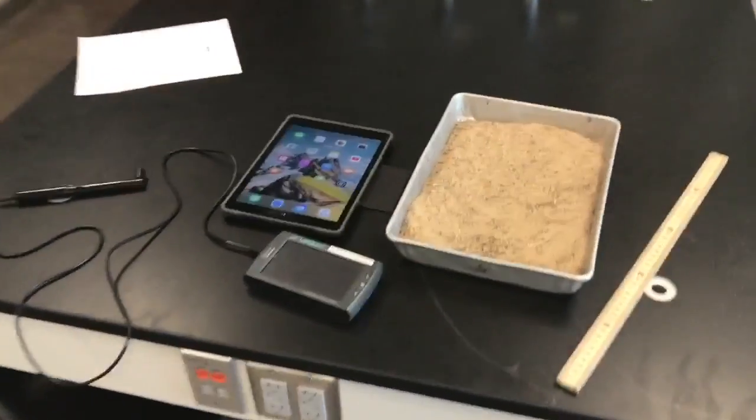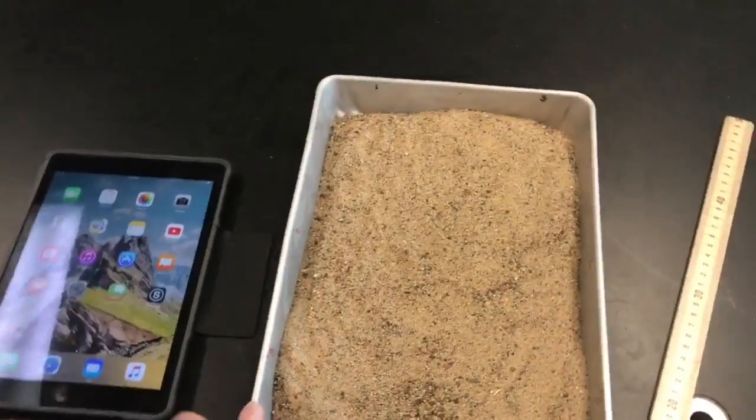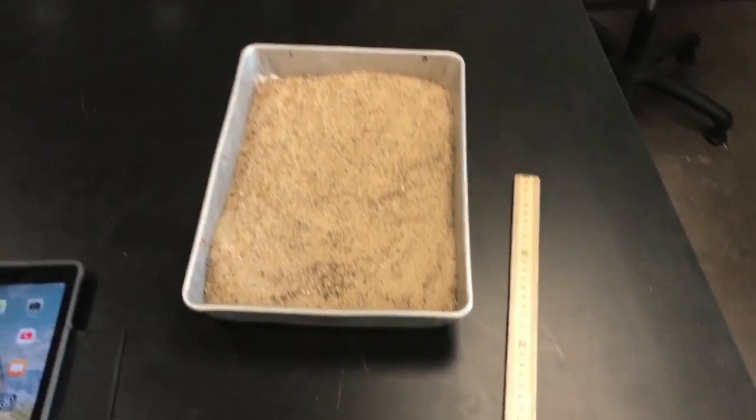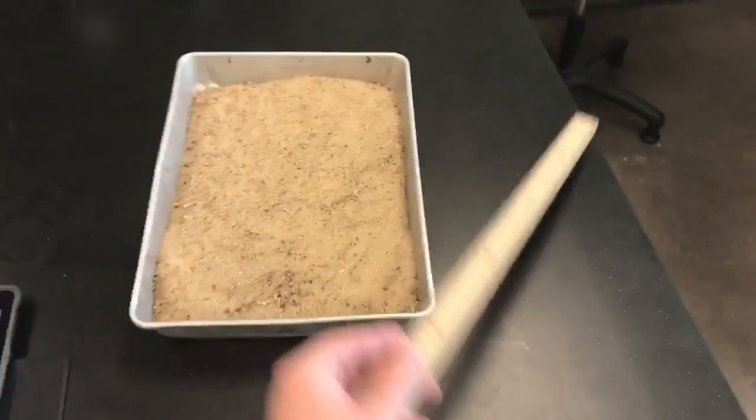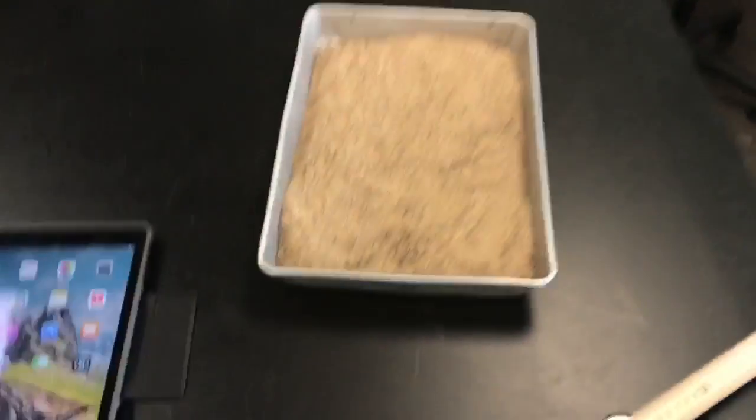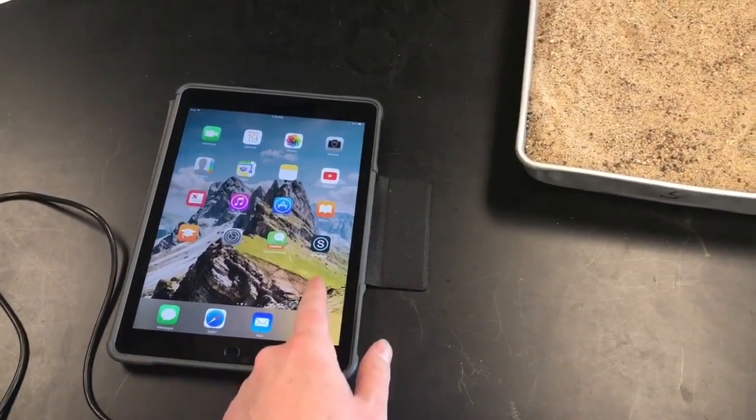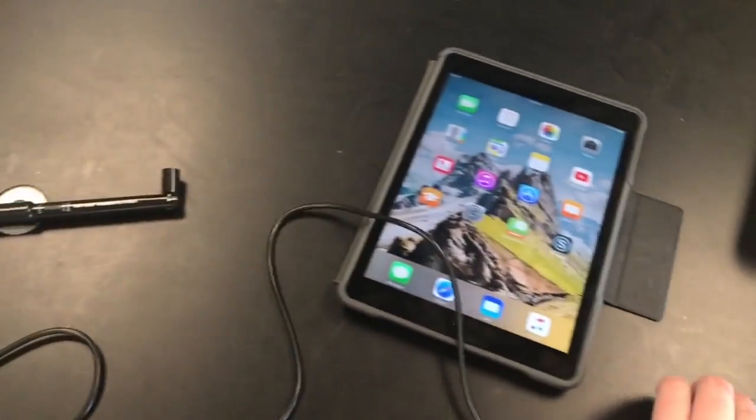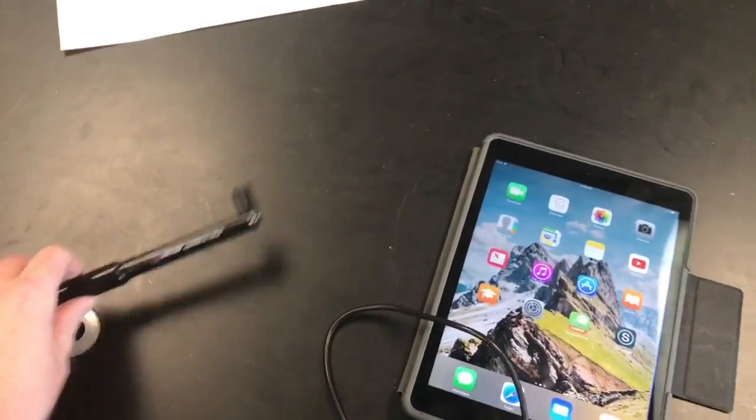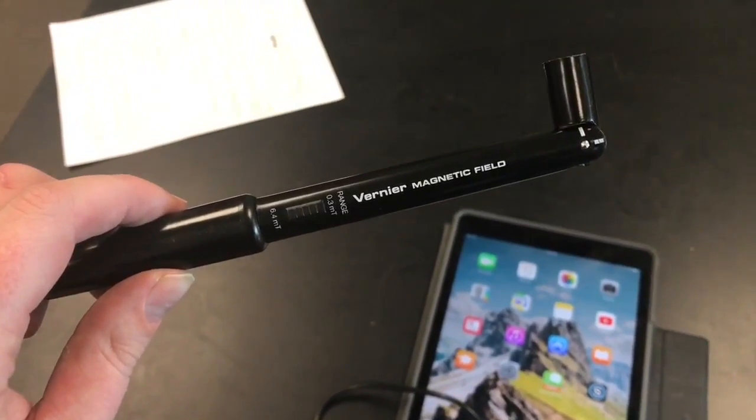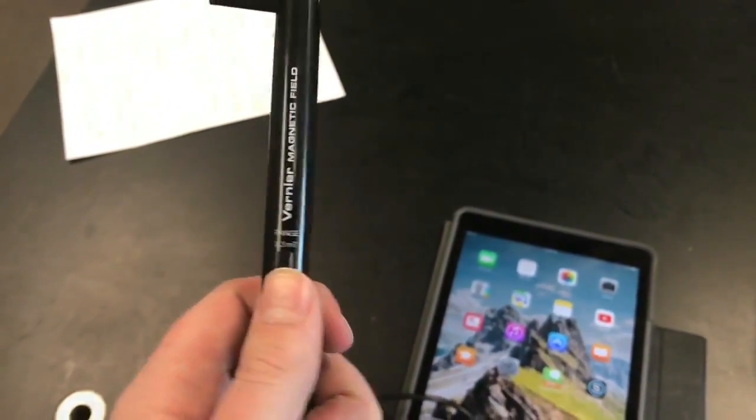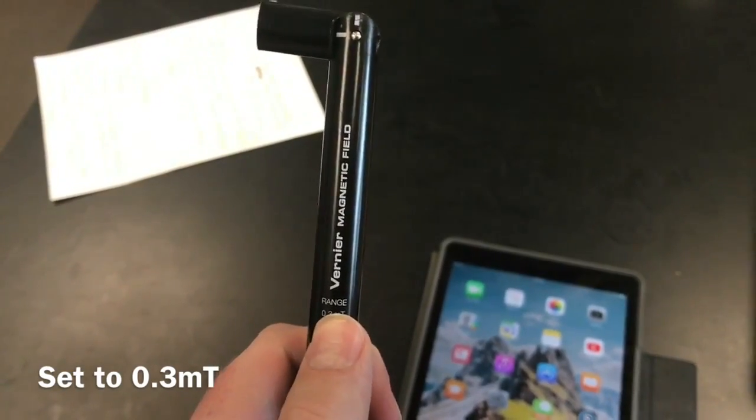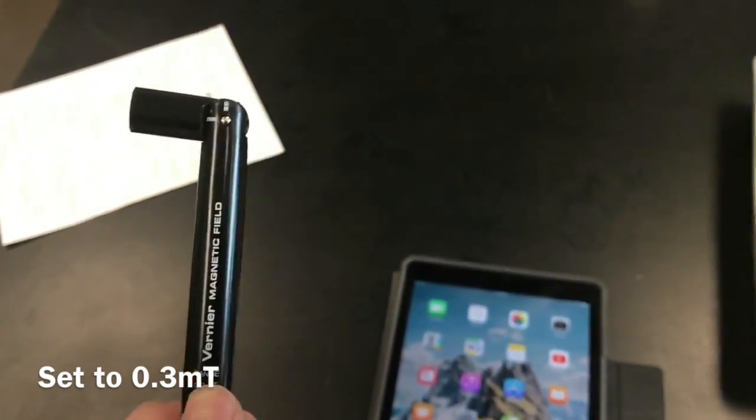All right, so for this lab, we're going to need this big metal pan full of sand. I'll explain more about that in just a second. Half meter stick, an iPad, and our LabQuest device. And our LabQuest device is going to be hooked up to a magnetic field probe. I can go ahead and just put it at the 0.3 setting so you don't forget. So 0.3 setting right away, we're going to use our magnetic field probe for the procedure of this lab.